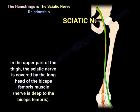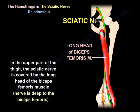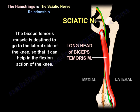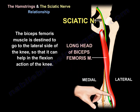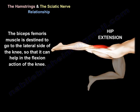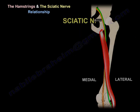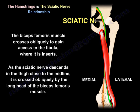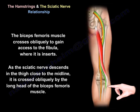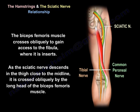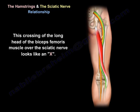In the upper part of the thigh, the sciatic nerve is covered by the long head of the biceps femoris muscle — the nerve is deep to the biceps femoris. The biceps femoris muscle is destined to go to the lateral side of the knee to help in knee flexion, so it crosses obliquely to gain access to the fibula where it inserts. As the sciatic nerve descends in the thigh close to the midline, it is crossed obliquely by the long head of the biceps femoris, and this crossing looks like an X.